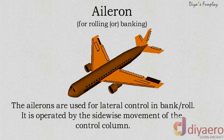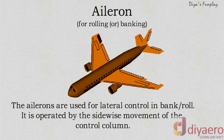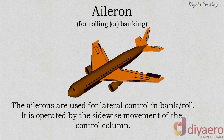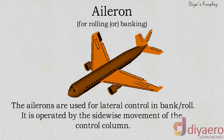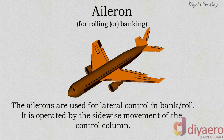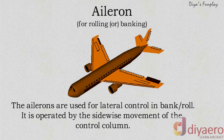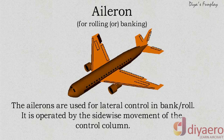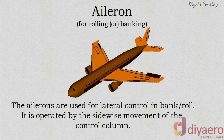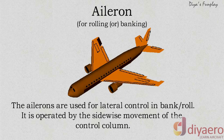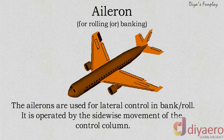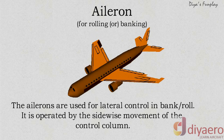For a wing to raise, the aileron should be deflected downwards. And for the wing to go down, the aileron should be deflected upwards. In short, the up-going aileron is on the down-going wing and the down-going aileron is on the up-going wing.